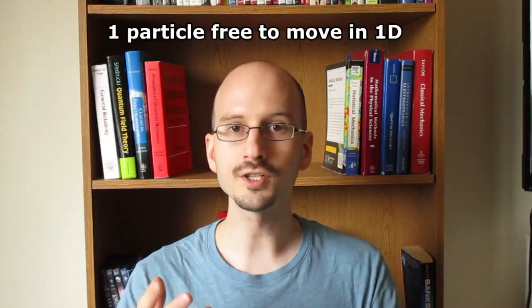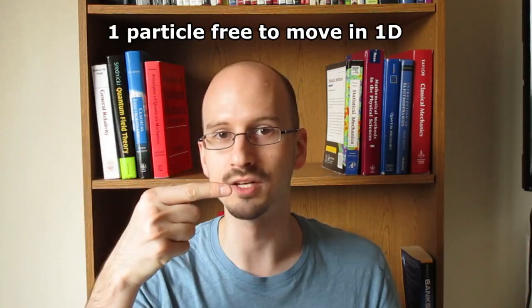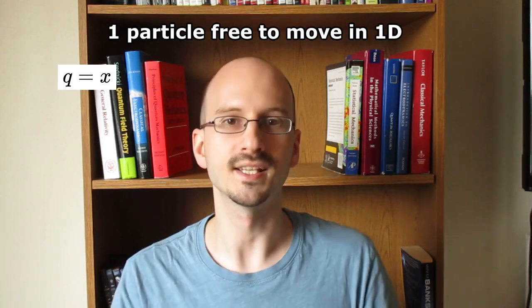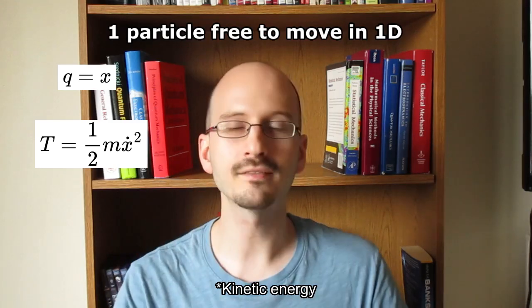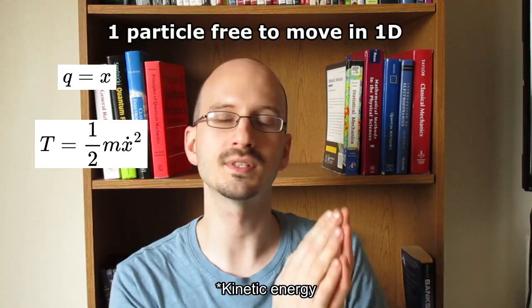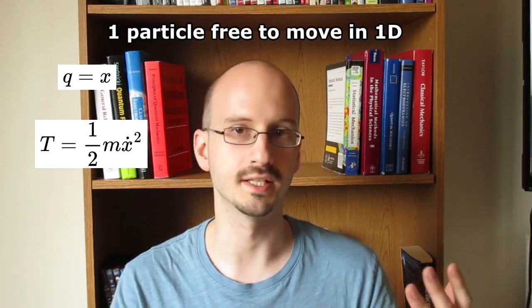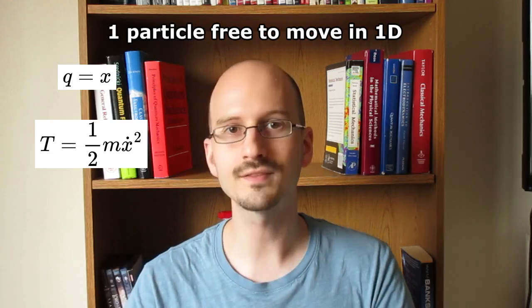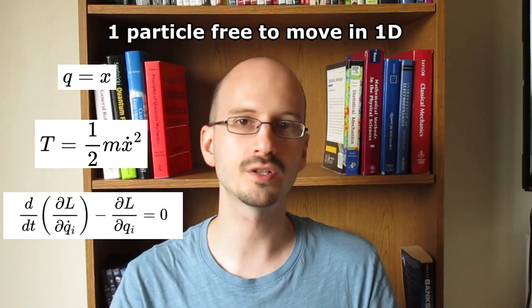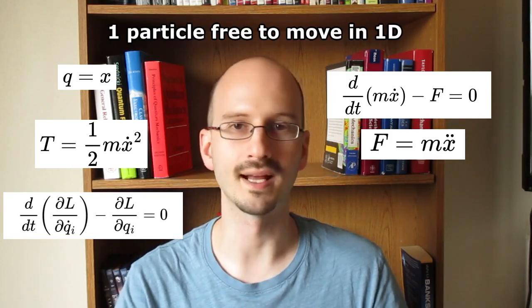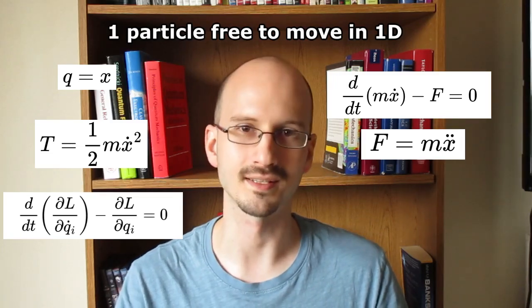So let's look at the four example systems talked about in the book. The first is a single free particle moving in one dimension. It can move left and right, so the q, the generalized coordinate, is x. Potential energy is 1/2 times its mass times its velocity squared, or x dot squared. The potential energy is unknown. When we take the relevant derivatives and plug them into Lagrange's equation, we get this, which simplifies to force is equal to mass times x double dot, or force is equal to mass times acceleration.